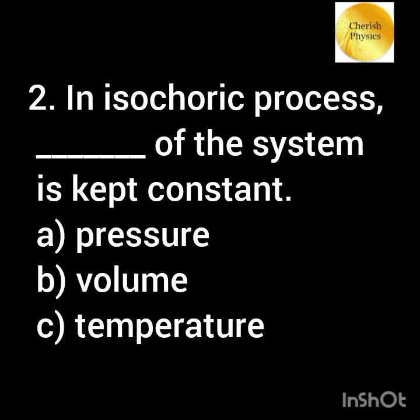In an isochoric process, dash of the system is kept constant. Option A: pressure. Option B: volume. Option C: temperature.